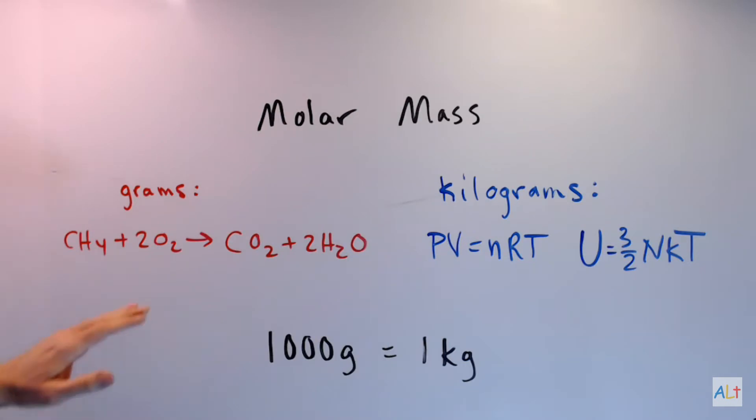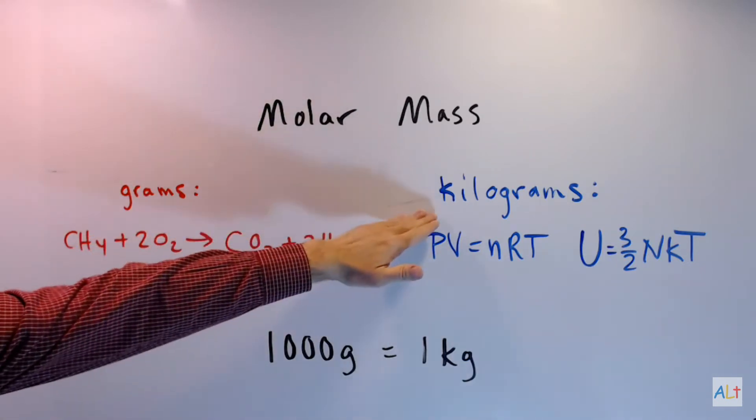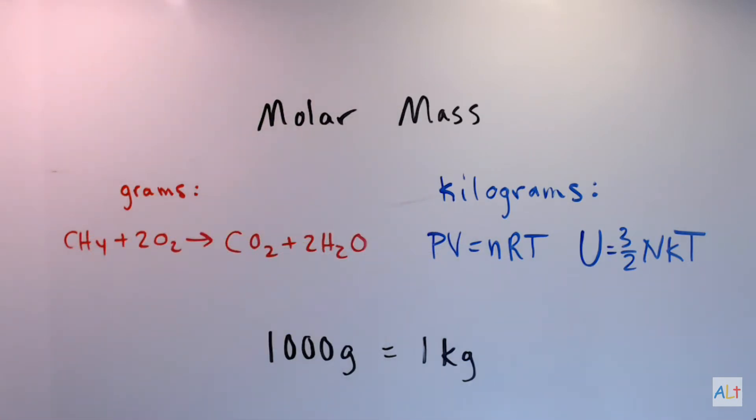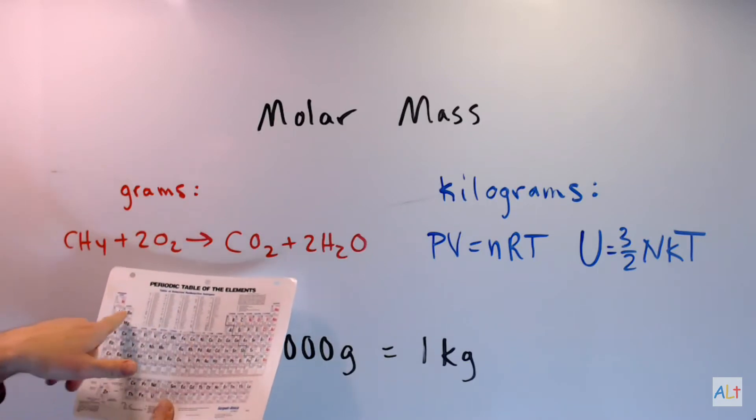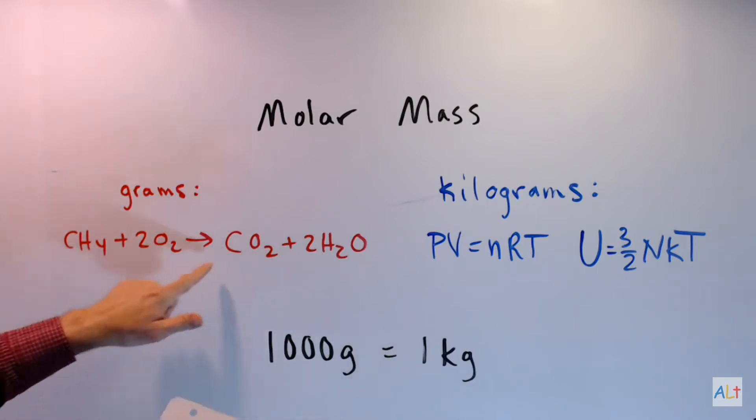If you're doing chemistry, it might be grams, might be kilograms. Grams is what you use when you're doing basic calculations involving chemical reactions. You look up the masses of your various atoms on a periodic table, you add them up for the molecules, and that will tell you the molar mass of each of those molecules in grams.